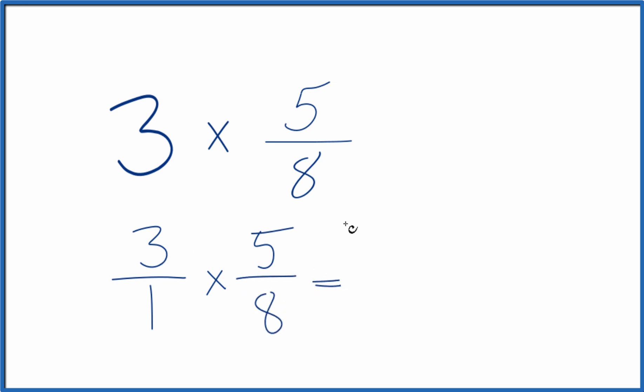Now when you multiply fractions, you multiply the numerators, then the denominators. 3 times 5 is 15. 1 times 8, that is 8.